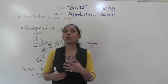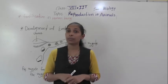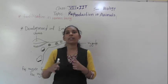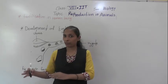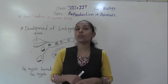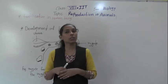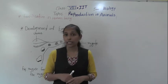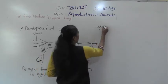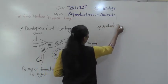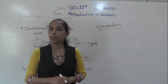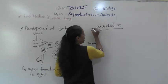In human beings, fertilization happens internally — we can say that internal fertilization takes place in human beings. The sperms are introduced into the vagina with the help of the penis during mating. That process is called ejaculation. So what is meant by ejaculation? The process of releasing sperms into the vagina is called ejaculation.